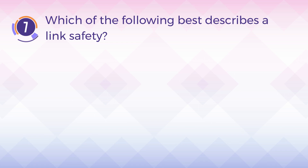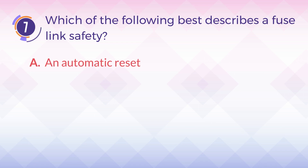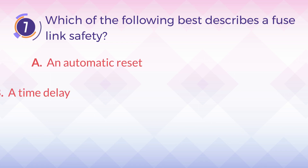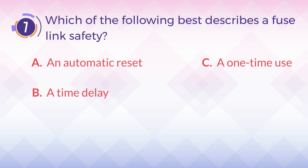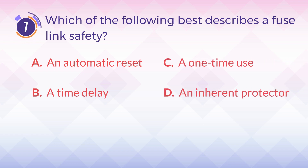Number 7. Which of the following best describes a fuse link safety? A. An automatic reset. B. A time delay. C. A one-time use. D. An inherent protector.